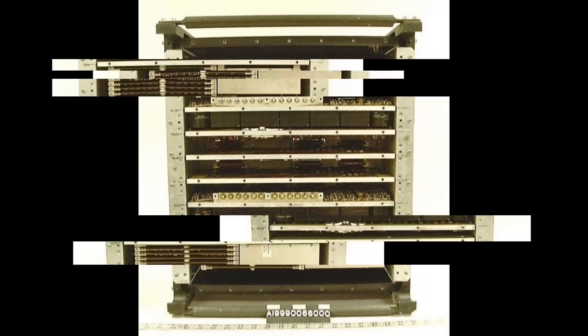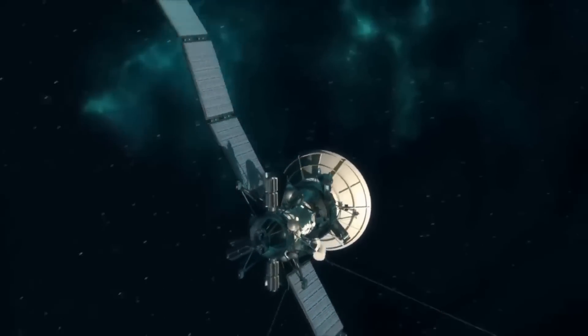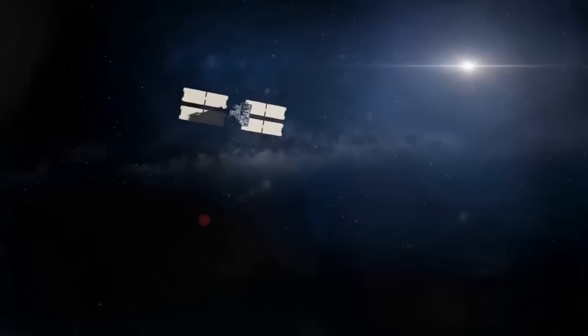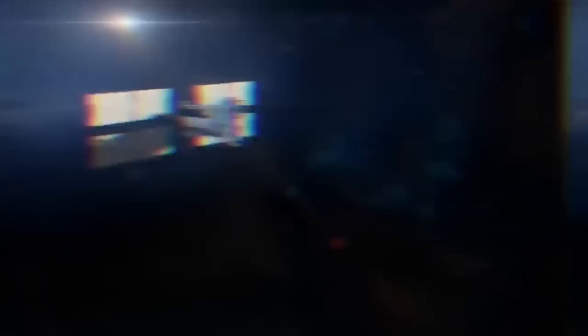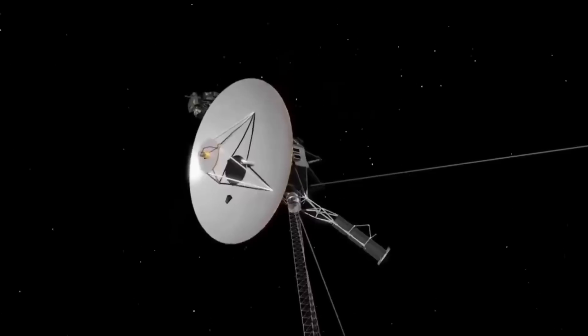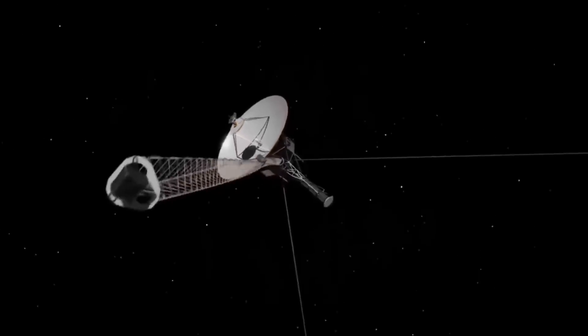Engineers swiftly devised a low-risk solution, sending a command to Voyager 1 to switch off the malfunctioning onboard computer and reactivate the primary AACS. The command was successfully received and executed by Voyager 1, resulting in the restoration of normal data transmission.